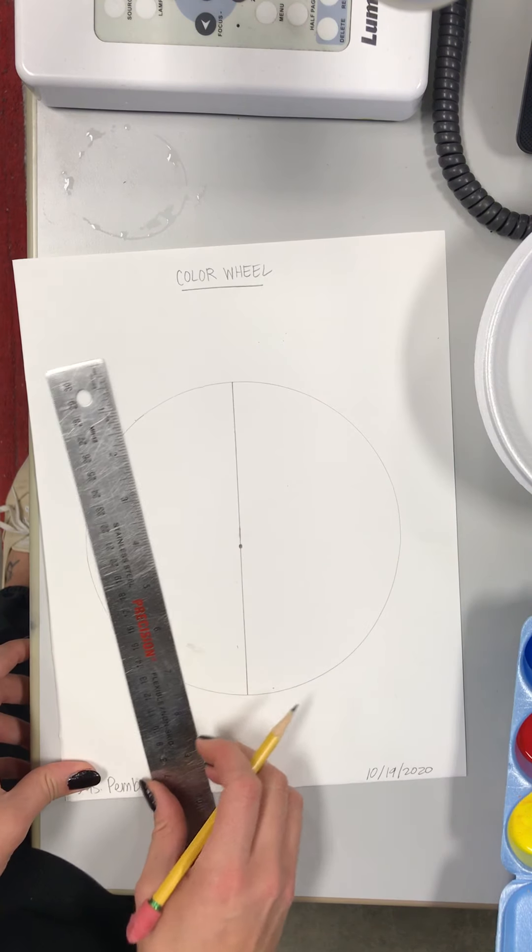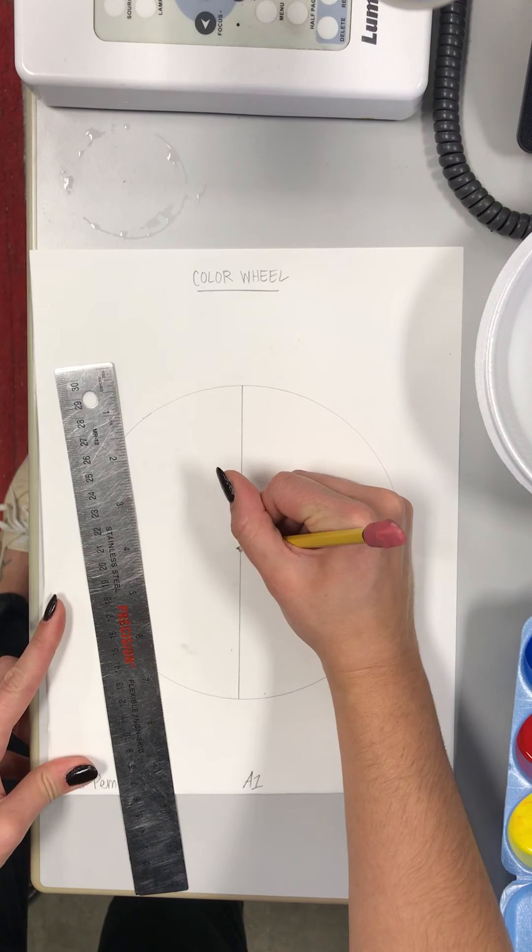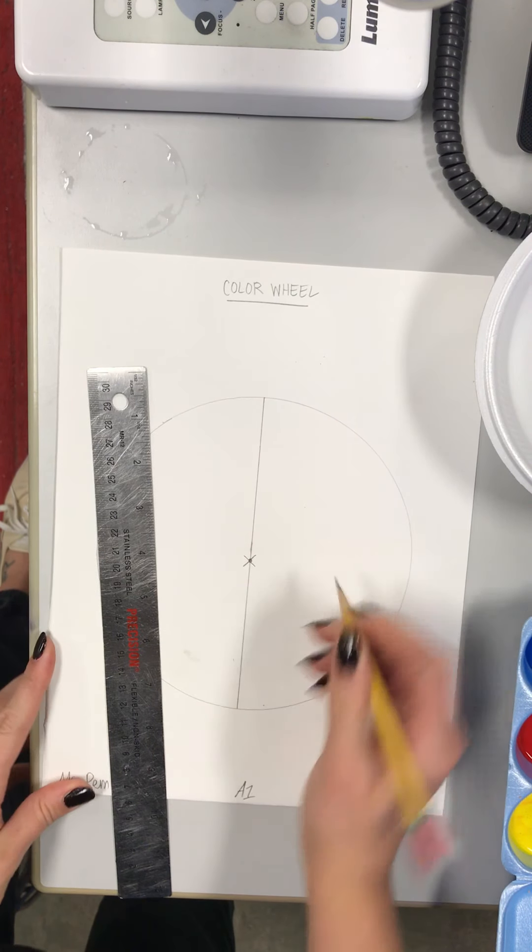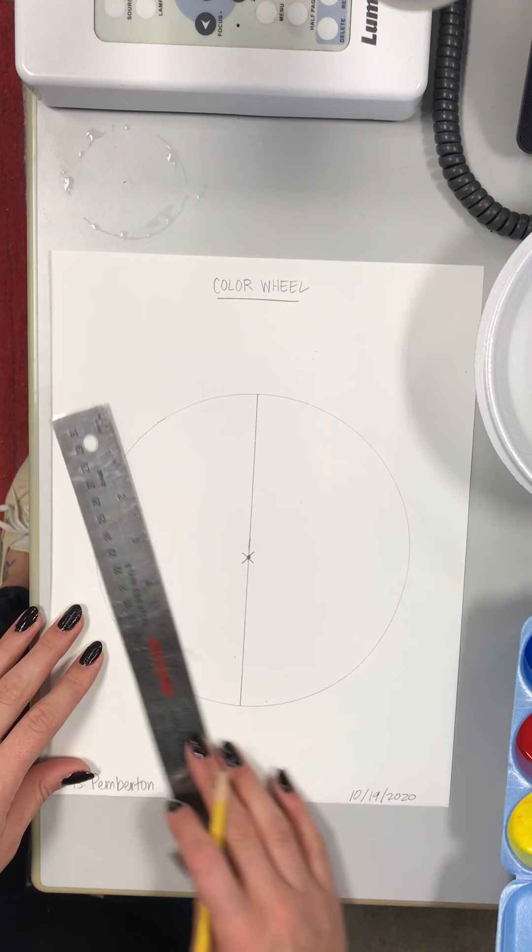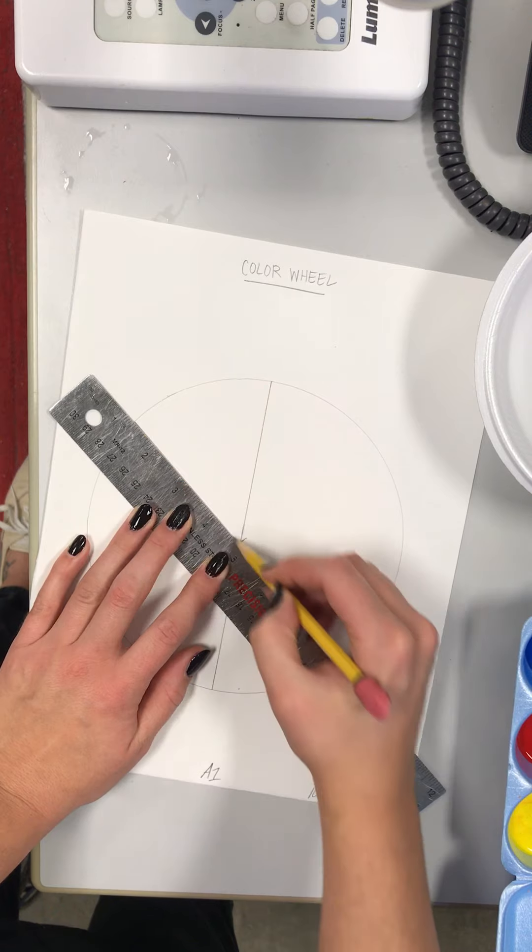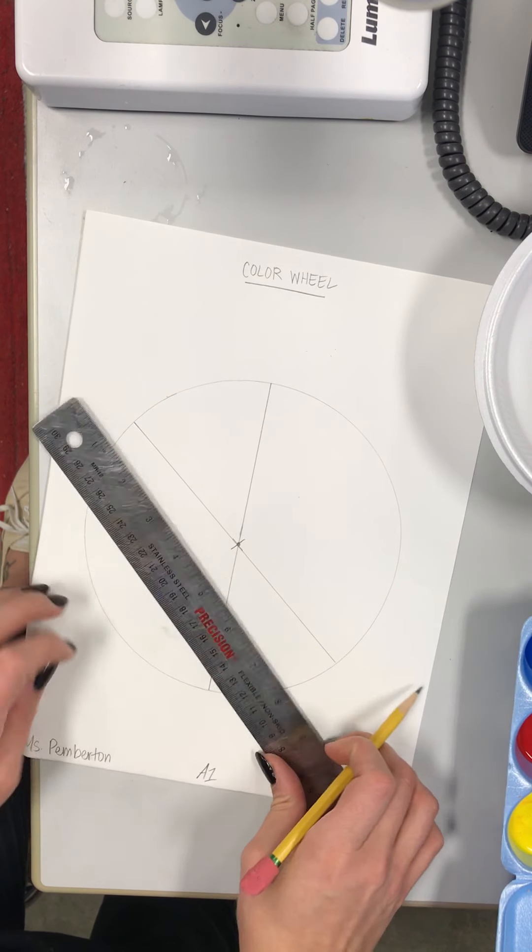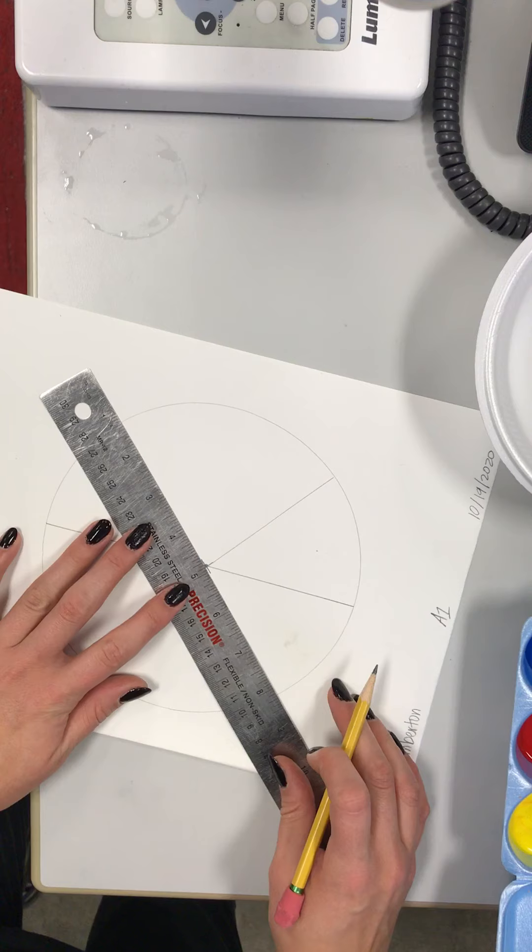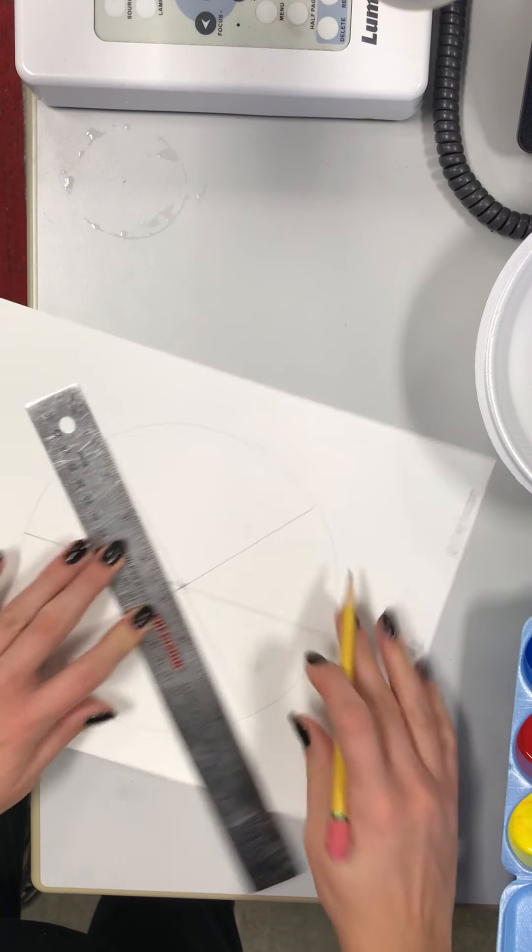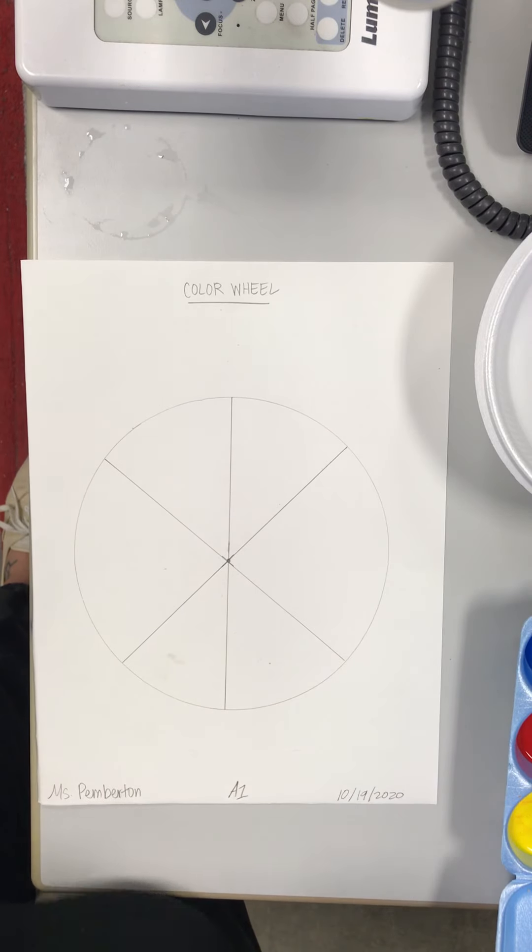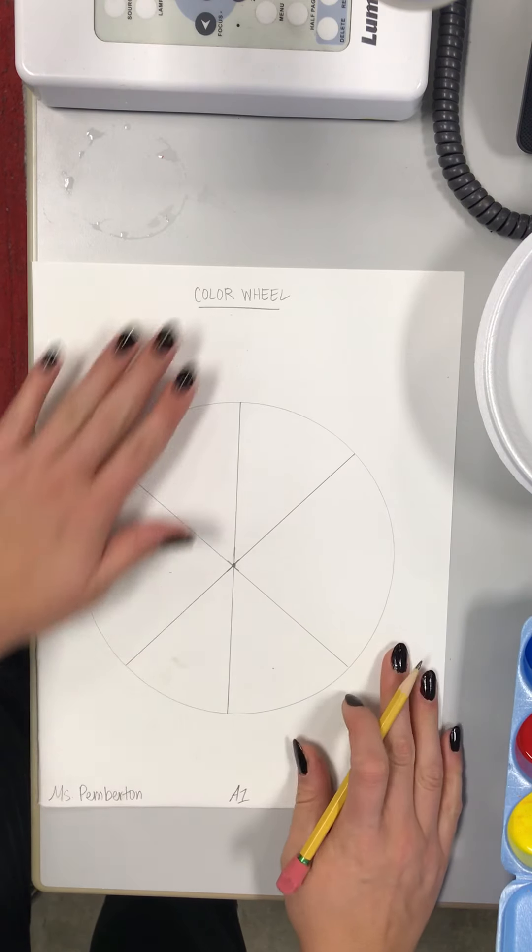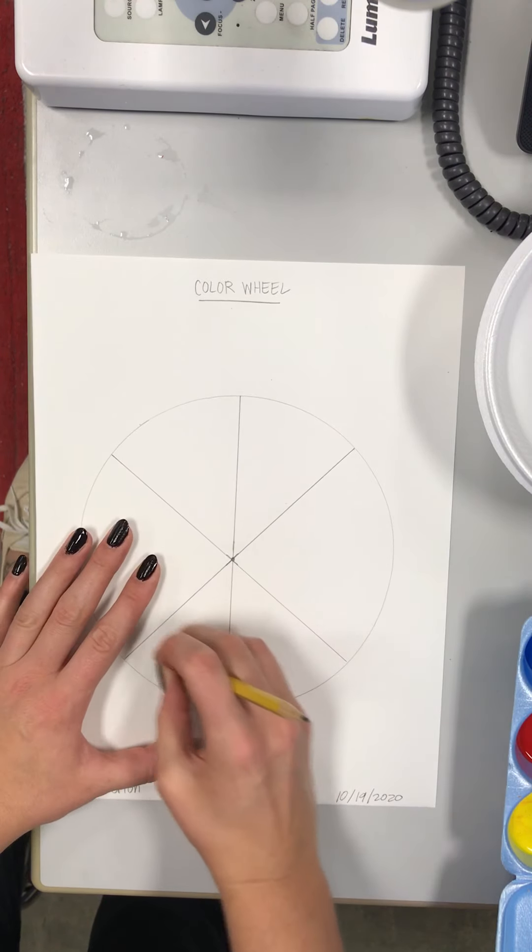So you're gonna start with this. After that, you're gonna make a small X in the middle of your paper like this. Then you're gonna draw two more lines through that X until you get a pie with six slices. Notice mine isn't totally perfect, that's okay, but make sure you have six that are about the same size.